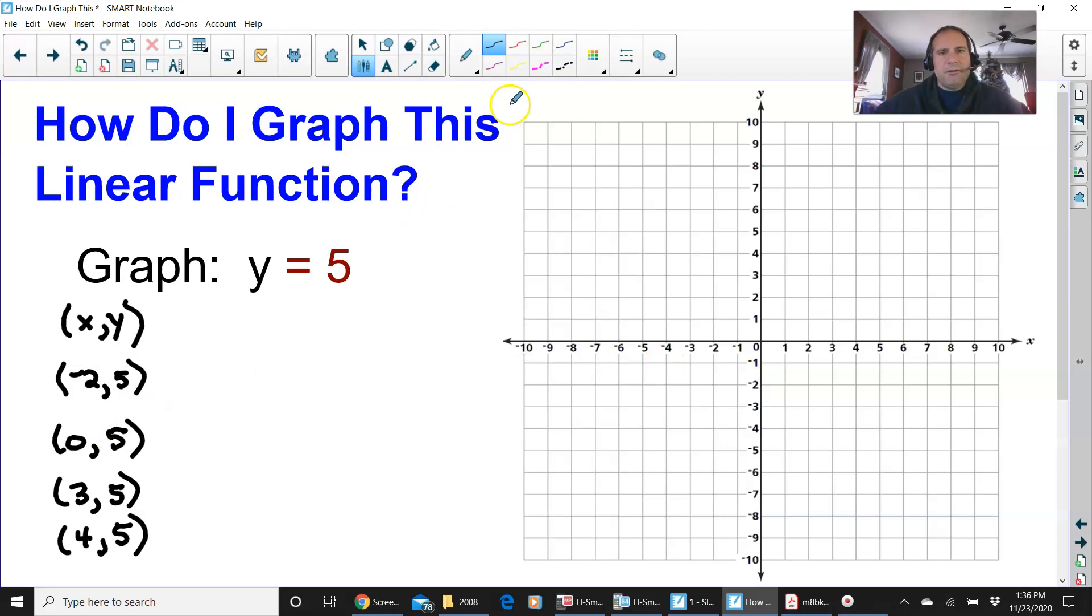Okay? So, now, I am going to go ahead and graph. Negative 2, 5 is up here. 0, 5 is here. 3, 5 is here. 4, 5 is here.